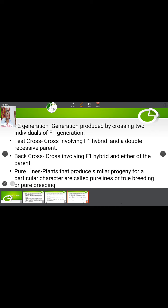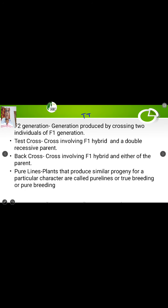In the monohybrid cross, by crossing the tall plant capital T capital T with small t small t, we get the F1 generation plant capital T small t. Now if we cross this F1 plant with the homozygous recessive parent small t small t, that crossing constitutes the test cross.